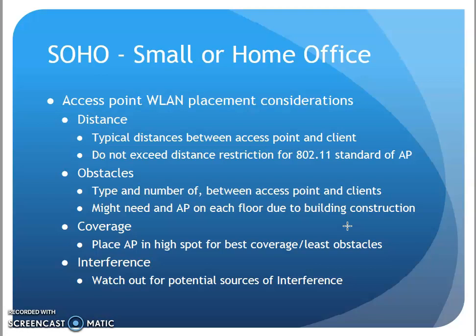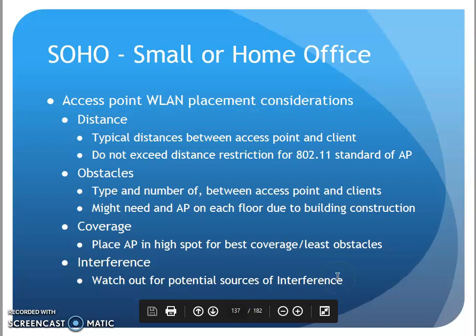For a small or home office router/access point connection, I have several considerations: distance to the devices I'm connecting to and my wireless standard, any obstacles that might be in the way, and the best coverage spot. Once upon a time I had mine in a corner of my house, but I rewired and moved it to a more central location — under my daughters' bedrooms and in the living room where most of us connect. I also need to watch out for sources of interference, which might be neighbors or other devices in your house like dryers and washing machines that can interfere with the wireless signal.